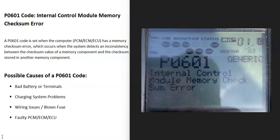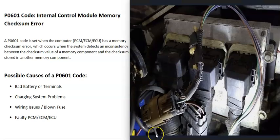Today I'm talking about a P0601 code — what it is and how you can go about fixing it. The P0601 code is an internal control module memory checksum error. Modern vehicles have computers that control everything, and the main computer — which can be called the powertrain control module, engine control module, or engine control unit — is having an internal issue with memory and sending out this P0601 code.